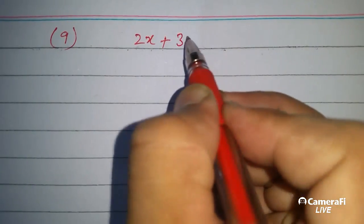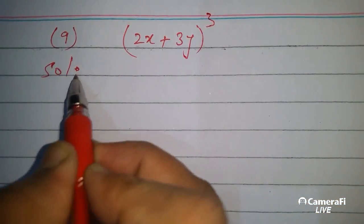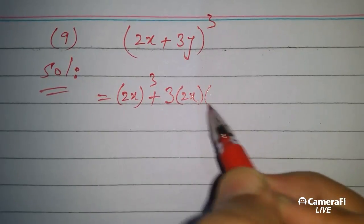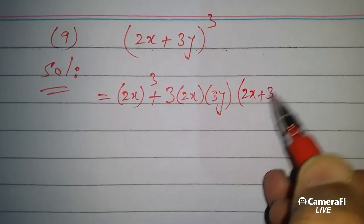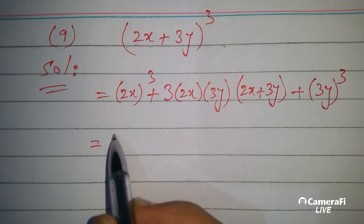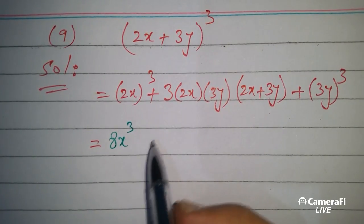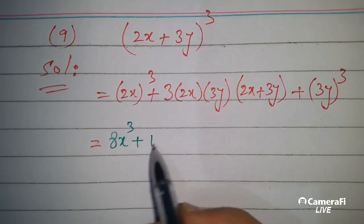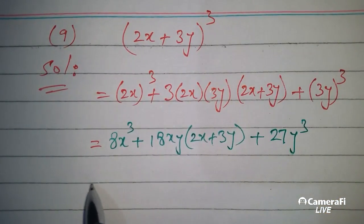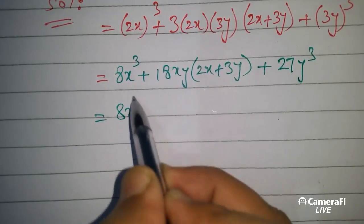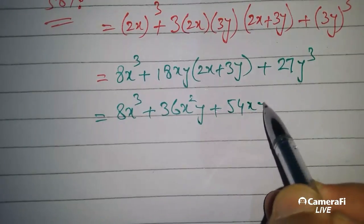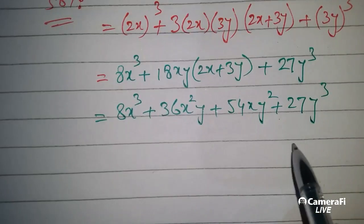Question number 9: (2x+3y)³. Applying the formula: the cube of the first term plus 3 times first term into second term into (first term plus second term) plus cube of the second term. It becomes 8x³ + 18xy(2x+3y) + 27y³, and this is the answer.